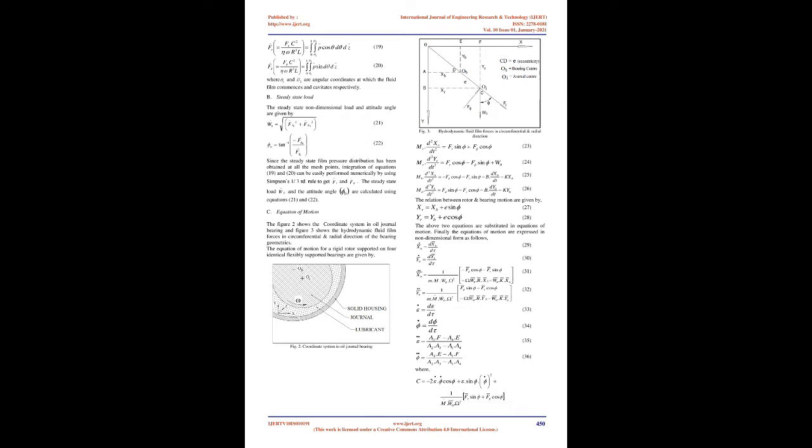The momentum equations are presented in a modified form using the equation of continuity. The second momentum equation is not used further because there is no variation in pressure across the film. After Konstantinescu and Galetuse, the velocity components are approximated by parabolic profiles and expressed in non-dimensional form, with dimensionless flow parameters in the x and z directions. Substituting these into the momentum equations and integrating yields the modified formulation.